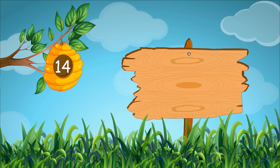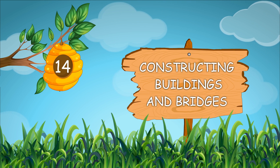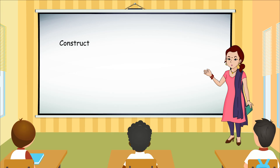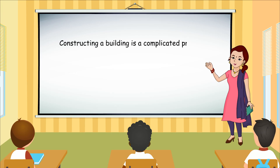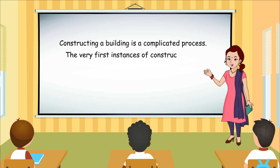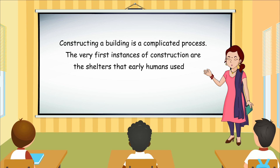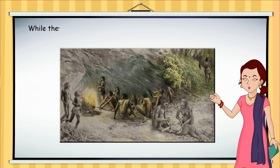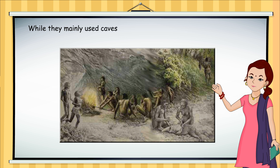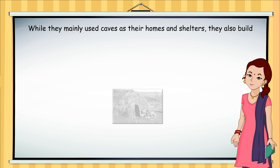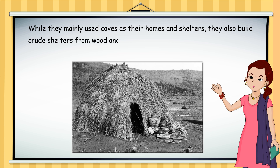Chapter 14: Constructing Buildings and Bridges. Constructing a building is a complicated process. The very first instances of construction are the shelters that early humans used to build for themselves. While they mainly used caves as their homes and shelters, they also built crude shelters from wood and leaves.